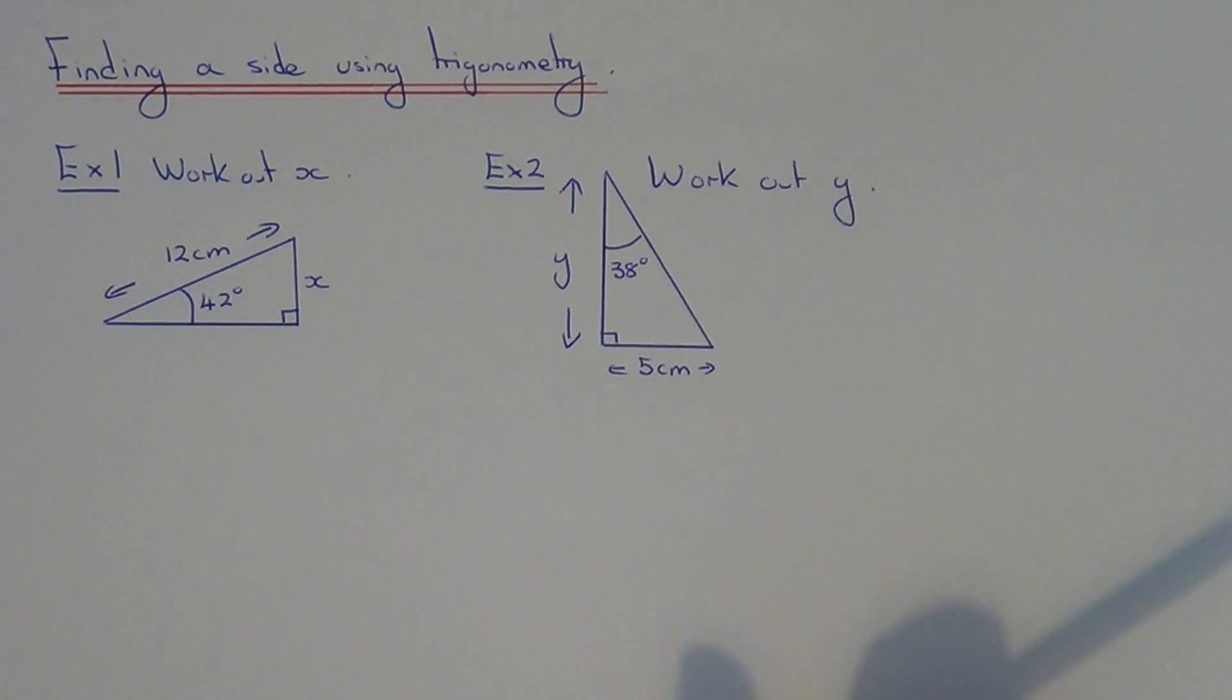Today I'm going to show you how to work out the missing side in a right angle triangle using trigonometry. The first thing you need to do is make sure that you're doing a trigonometric question. A lot of students get this mixed up with Pythagoras.